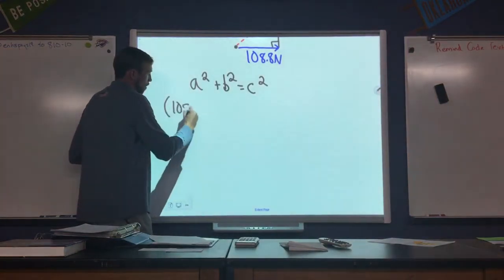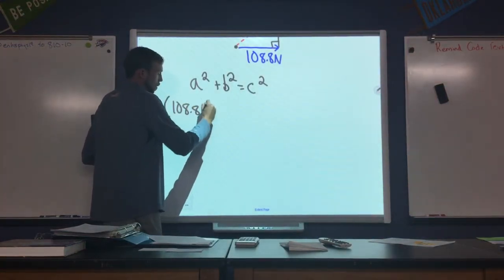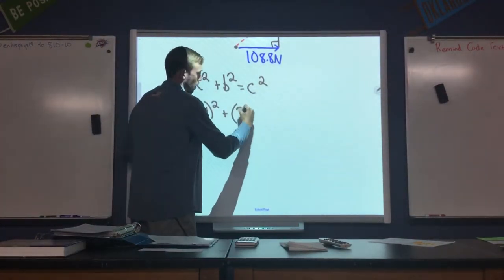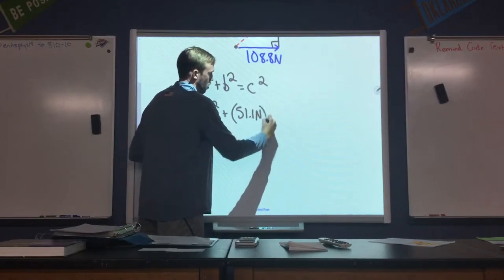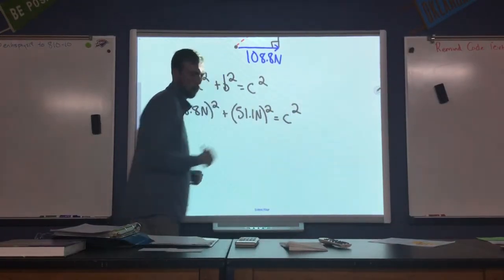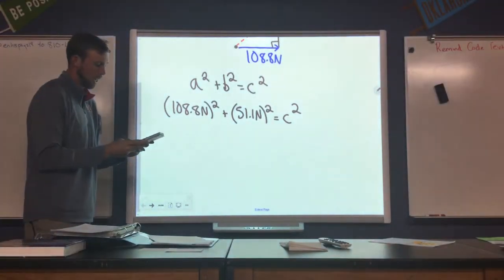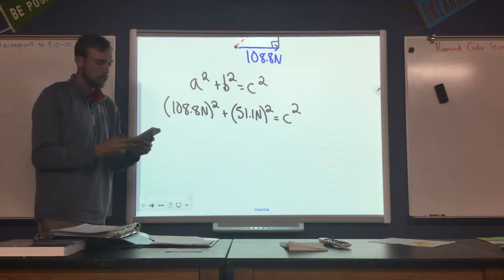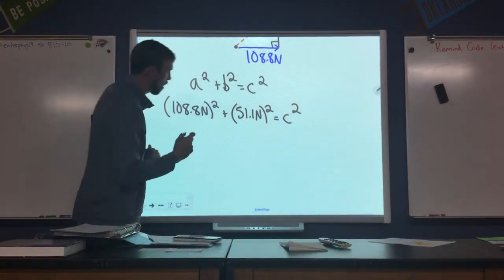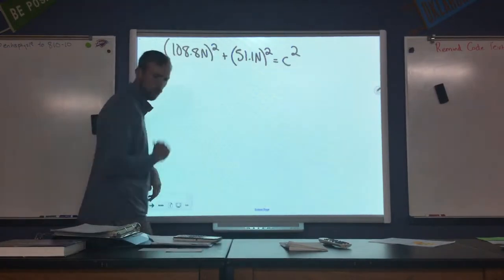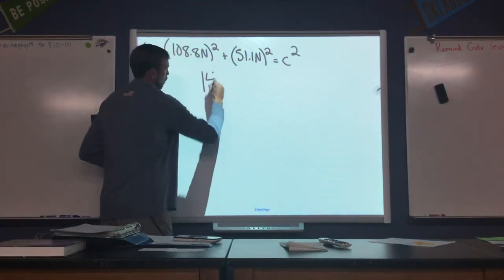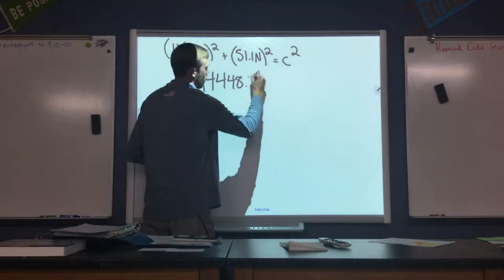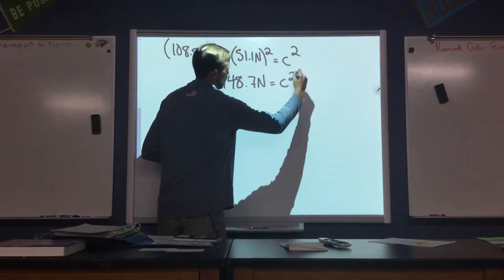So a we can just say is one of our sides that we know: 108.8 newtons. That is squared. b, our other side, 51.1 newtons quantity squared is equal to c squared. So that gives us a pretty large value. It looks like 14,448.7 newtons squared is equal to c squared.